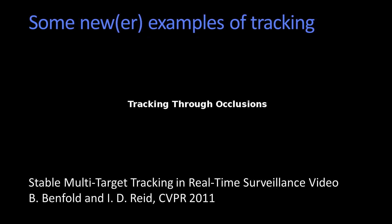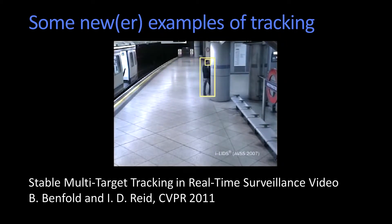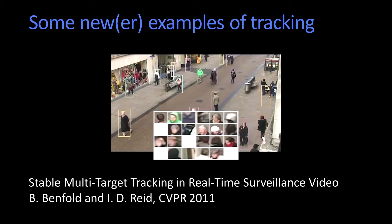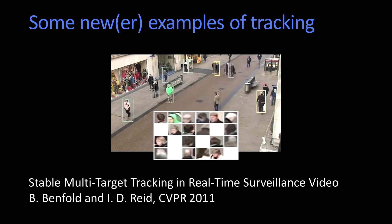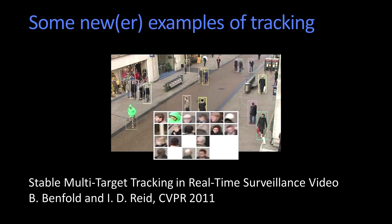There are a couple of interesting things to notice here. Watch this guy going behind the pole — he goes behind the pole and appears on the other side. You might ask how it does that. I'm not going to tell you yet — I'll tell you soon. It's also showing just the heads that have been tracked. This is an example of state-of-the-art tracking, at least from a couple of years ago.